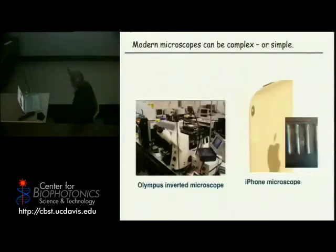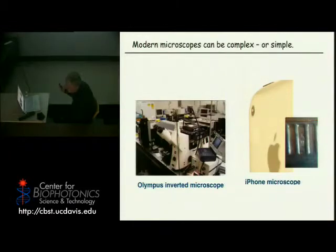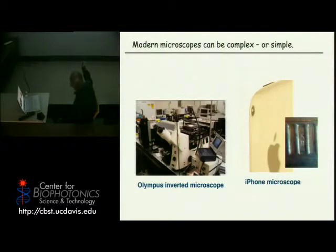Microscopes can be very complicated with multiple imaging screens, or actually quite simple. One of the guys at the Center for Biophotonics invented a small lens you can put on a camera phone, and you can get actually pretty good magnification — you can see down to five microns.